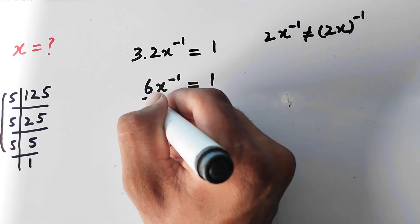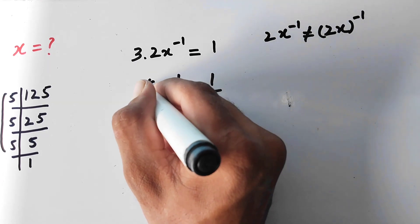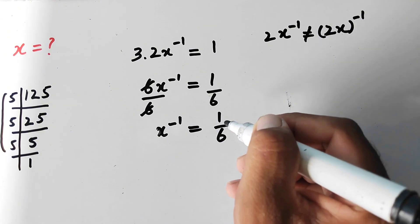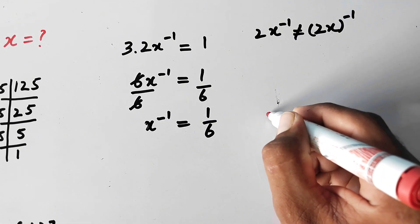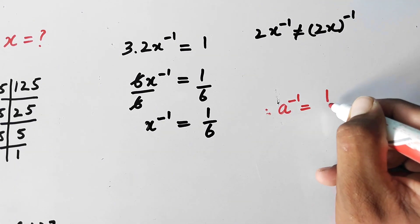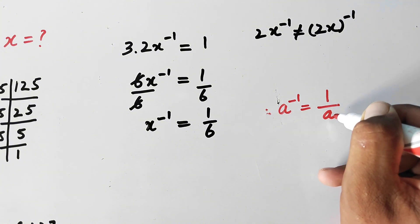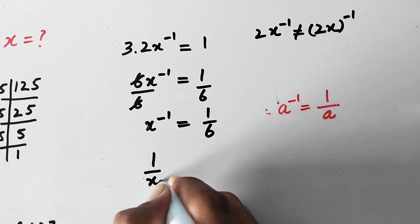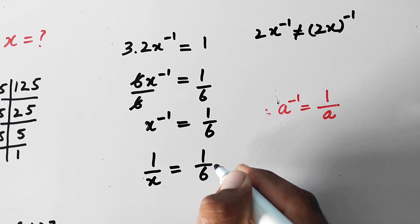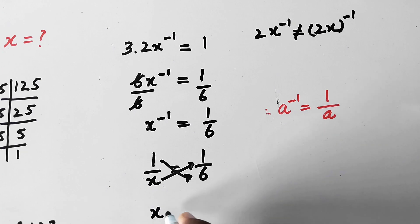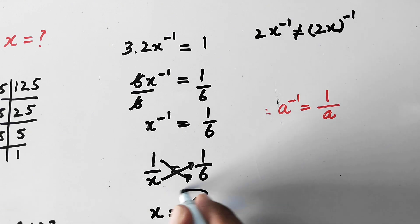Now we will divide both sides by 6. The 6 cancels on the left and we are left with x raised to power minus 1 is equal to 1 over 6. As we know, a value with negative power can be written in reciprocal form, so x raised to power negative 1 is the same as 1 over x, which equals 1 over 6. Cross-multiplying gives x times 1 equal to x and 1 times 6 equal to 6, so the value of x is 6.